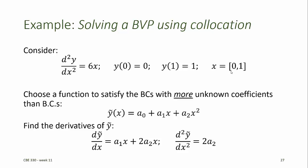We might choose a function that can easily satisfy these boundary conditions with more unknown coefficients than we have boundary conditions. To implement collocation, we first assume an approximating function y-tilde that will approximate our solution. Y-tilde should have more unknown coefficients than we have boundary conditions, so we'll use a quadratic equation. A quadratic equation has three unknown coefficients and we have only two boundary conditions. We're going to need to find both the first and second derivatives of y-tilde because the second derivative appears in our defining equation, so we differentiate y-tilde twice.